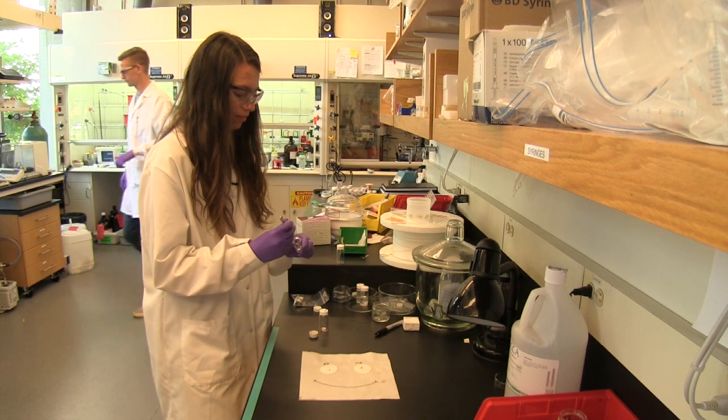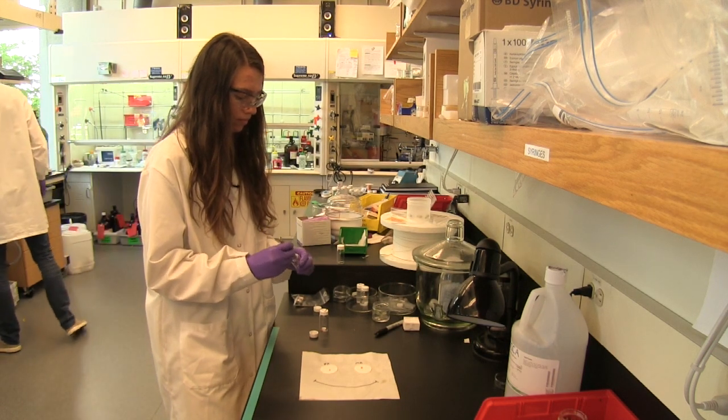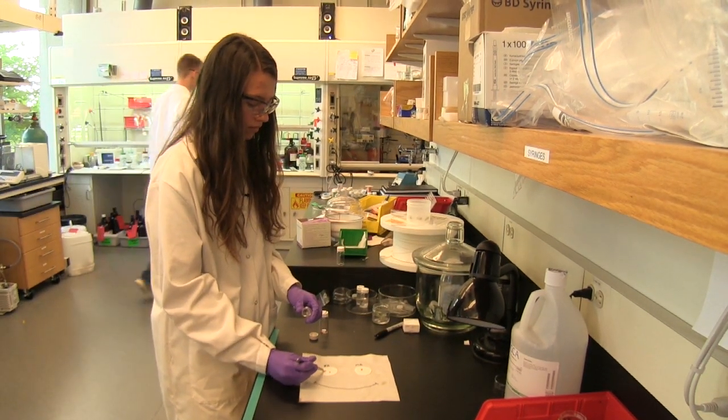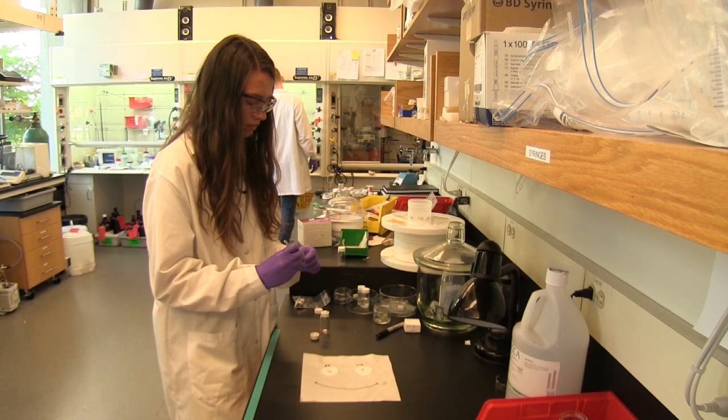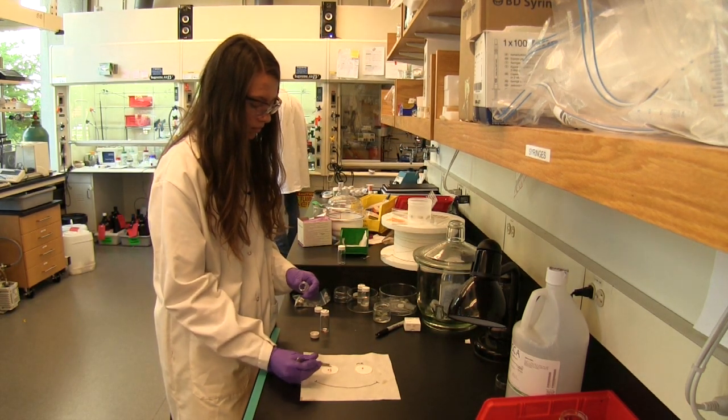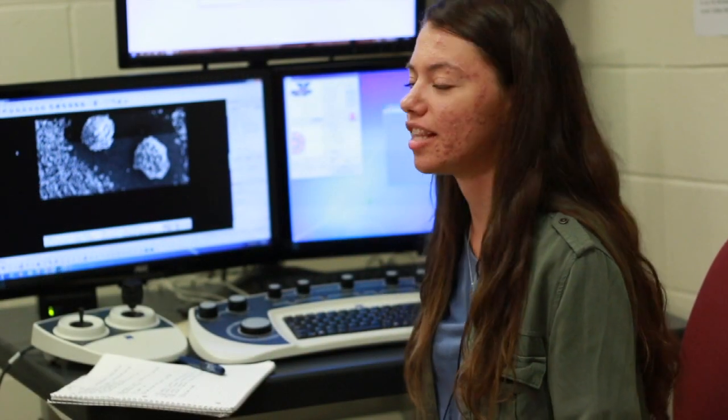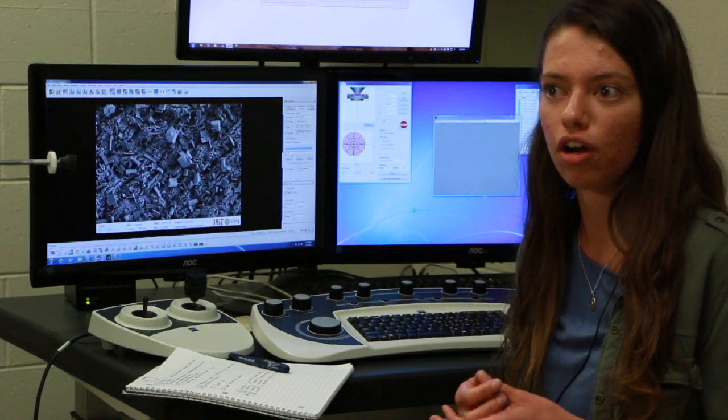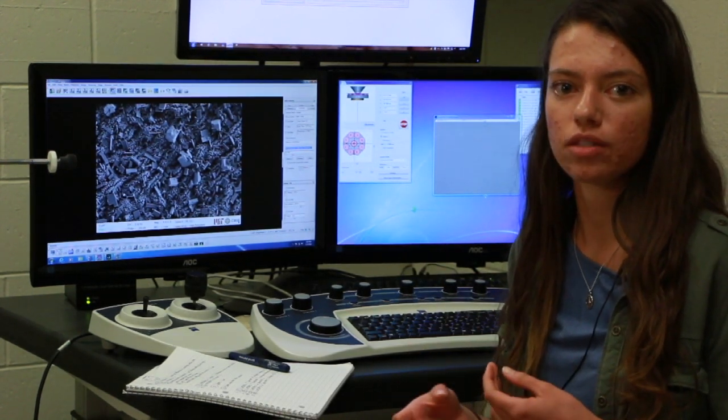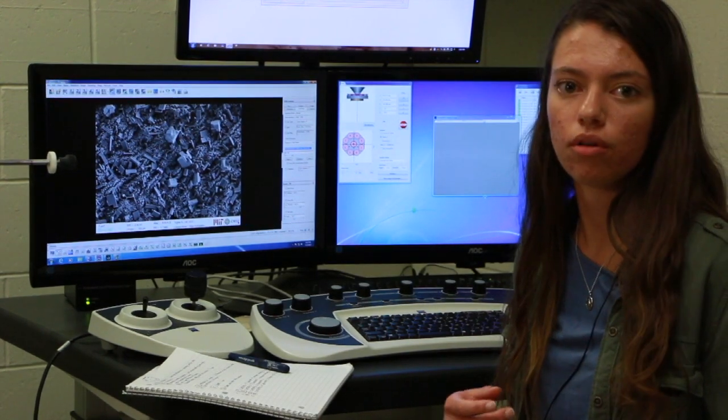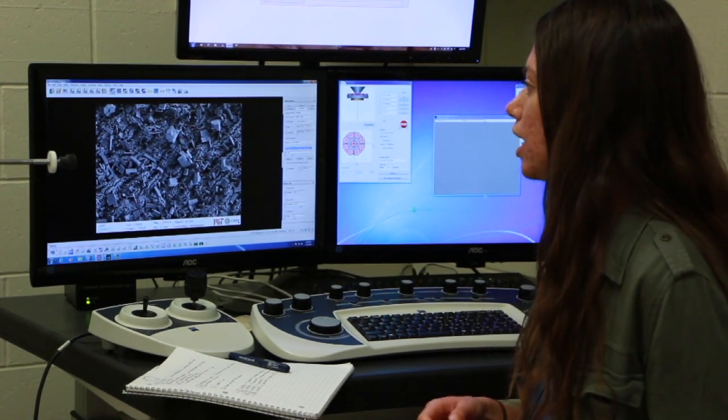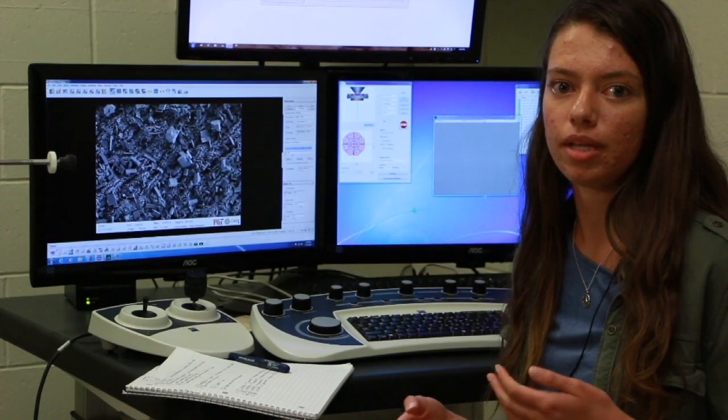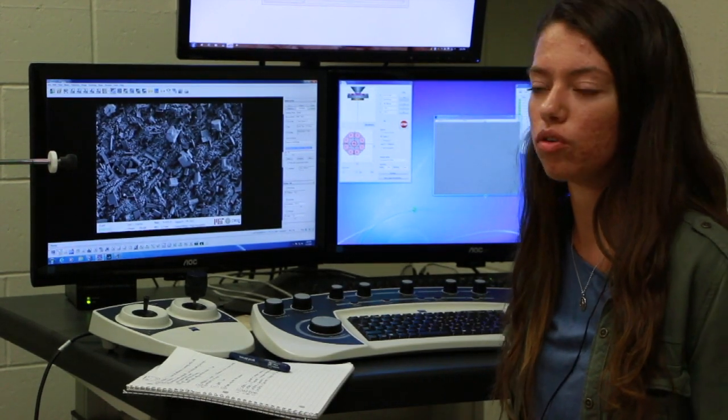I am a rising senior at Penn State, and I'm studying chemical engineering. This summer, I'm working in the Tisdale lab. My project is synthesizing these different perovskites in two different forms, which are single crystals and microplates. Basically, the single crystals are millimeters in size, whereas the microplates are a lot smaller, so they're more like microns in size. But they should exhibit similar properties to the single crystal.